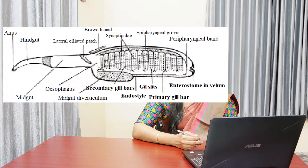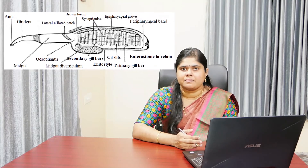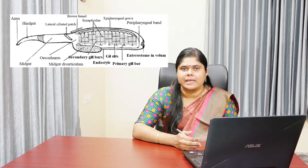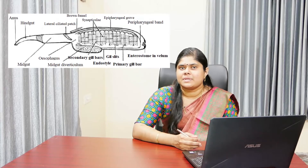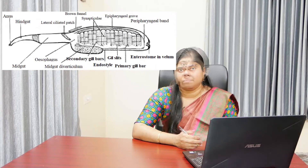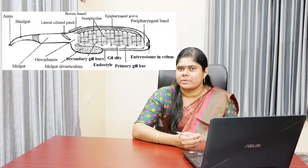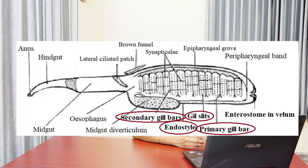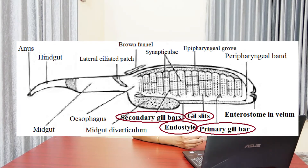Next is the pharynx. The pharynx in Amphioxus is mainly an organ of feeding. It is a very spacious and laterally compressed sac forming the largest part of the alimentary canal. It remains suspended in the atrial cavity, which surrounds it on all sides except the dorsal. The wall of the pharynx is perforated by numerous gill slits, and these gill slits are separated from each other by gill bars. The gill bars are of two types: primary gill bars and secondary gill bars, which regularly alternate with each other. All gill bars are strengthened by a skeletal rod, and they are the forerunners of the visceral skeleton of higher vertebrates.